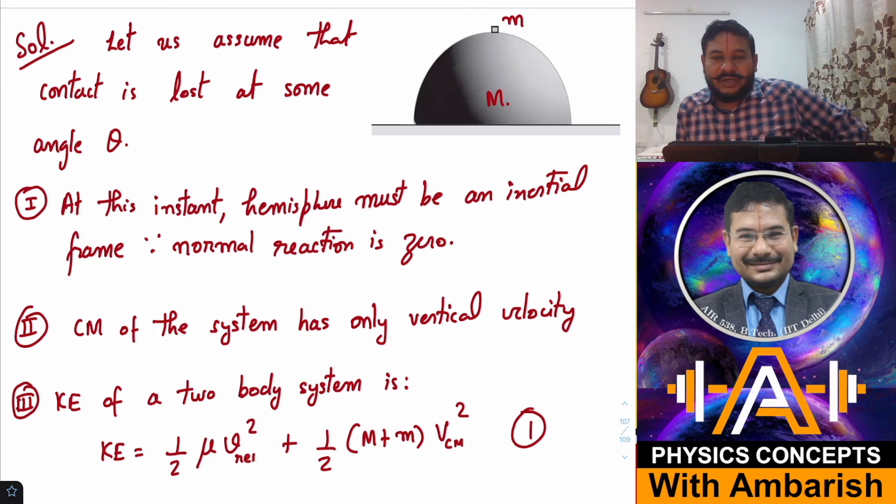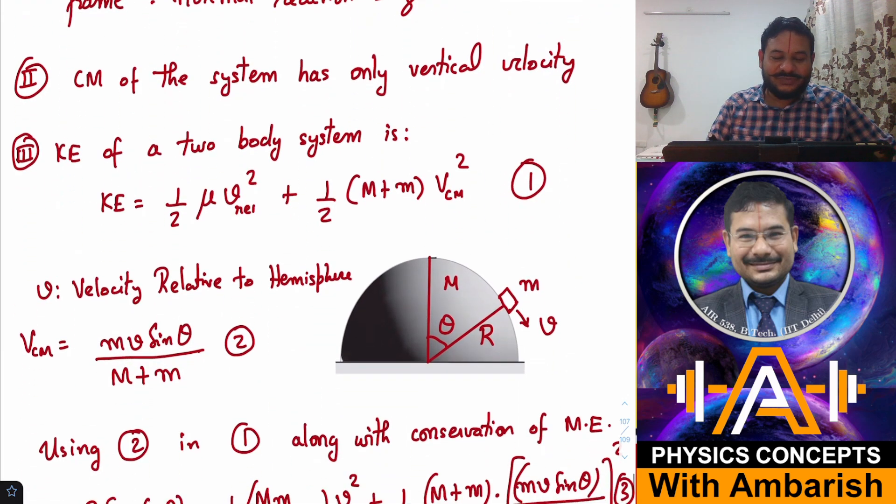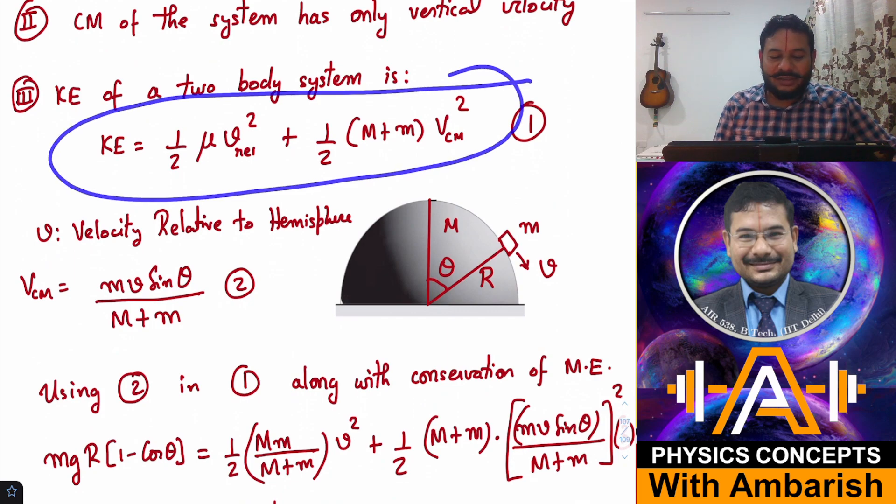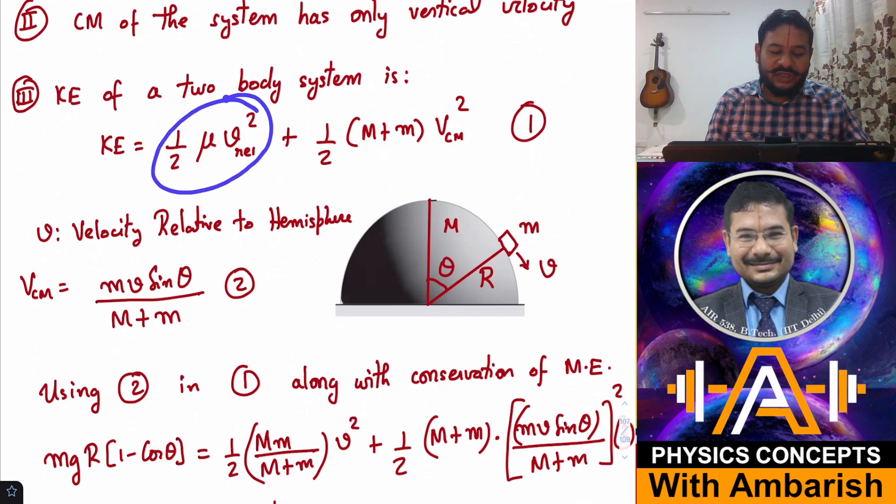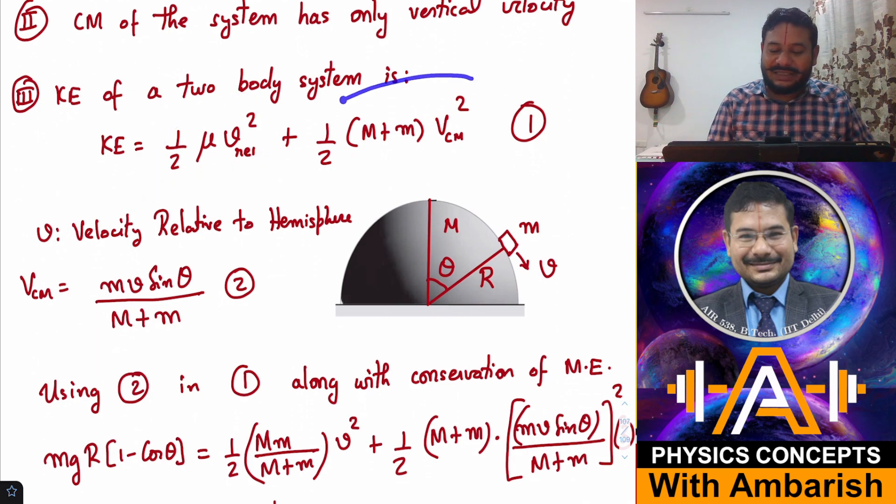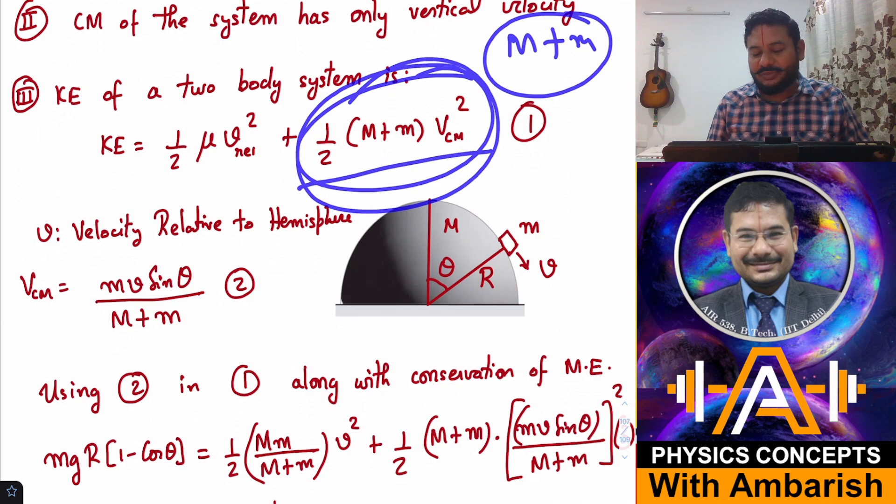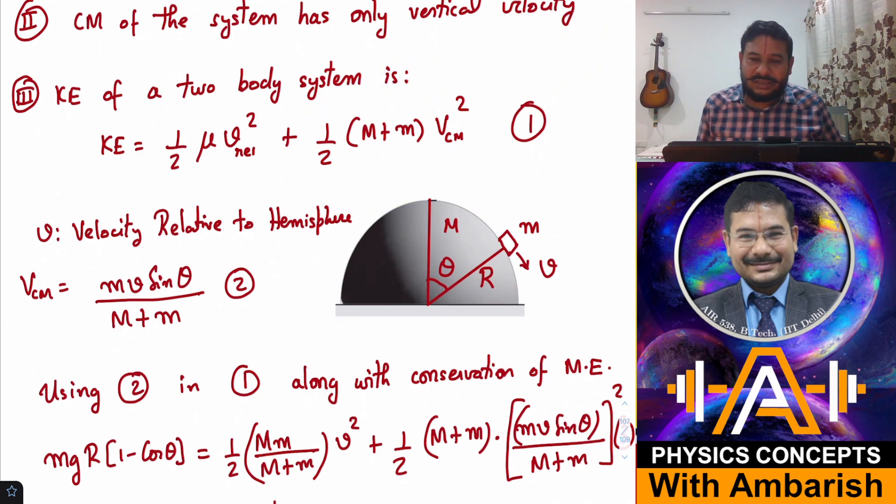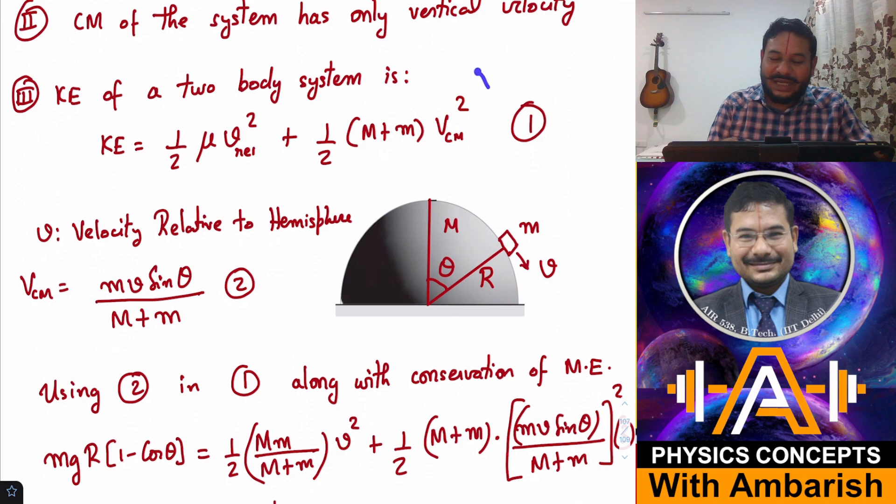Another thing we know is that the center of mass cannot have any horizontal velocity. Why? Because there's no external force in the horizontal direction, although there is gravity in the vertical direction. So center of mass cannot have any horizontal velocity, but it can have some vertical velocity. I'm going to simplify things by avoiding intelligently induced variables so I can do this problem with fewer variables. I'll be using the concept of center of mass.